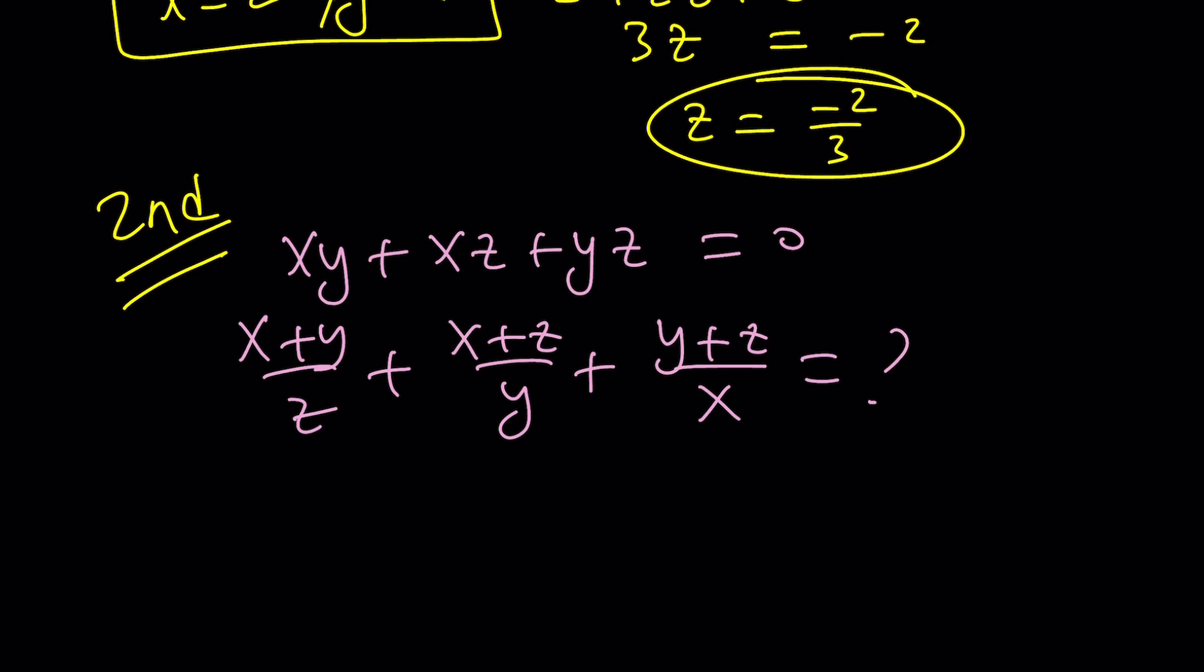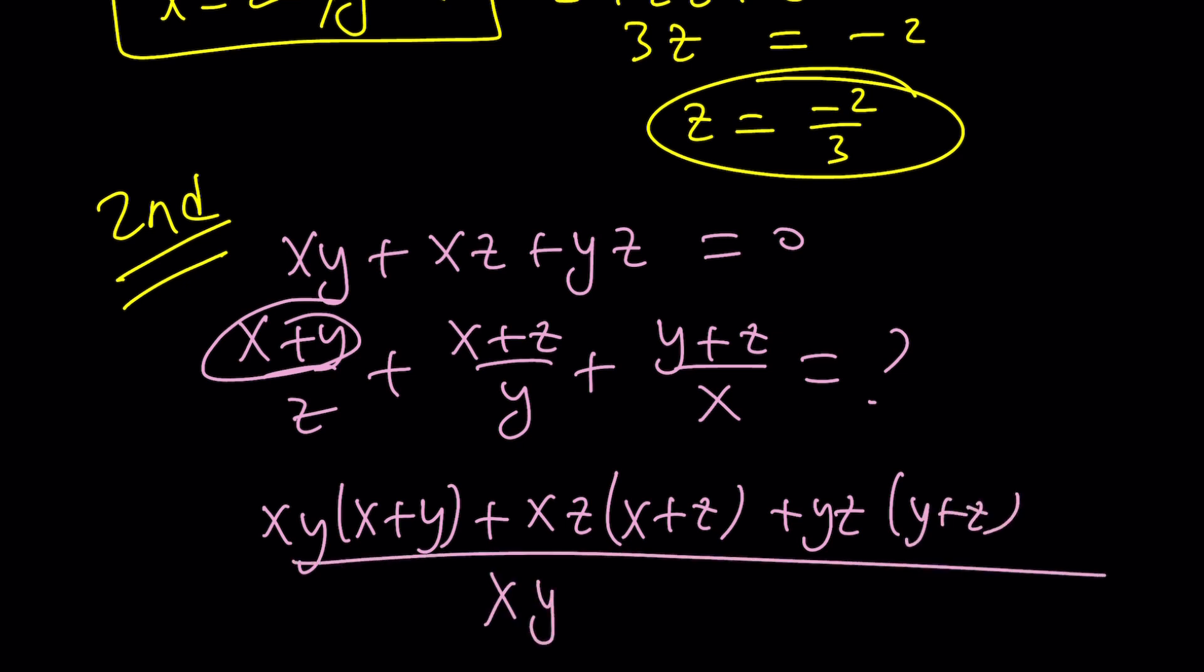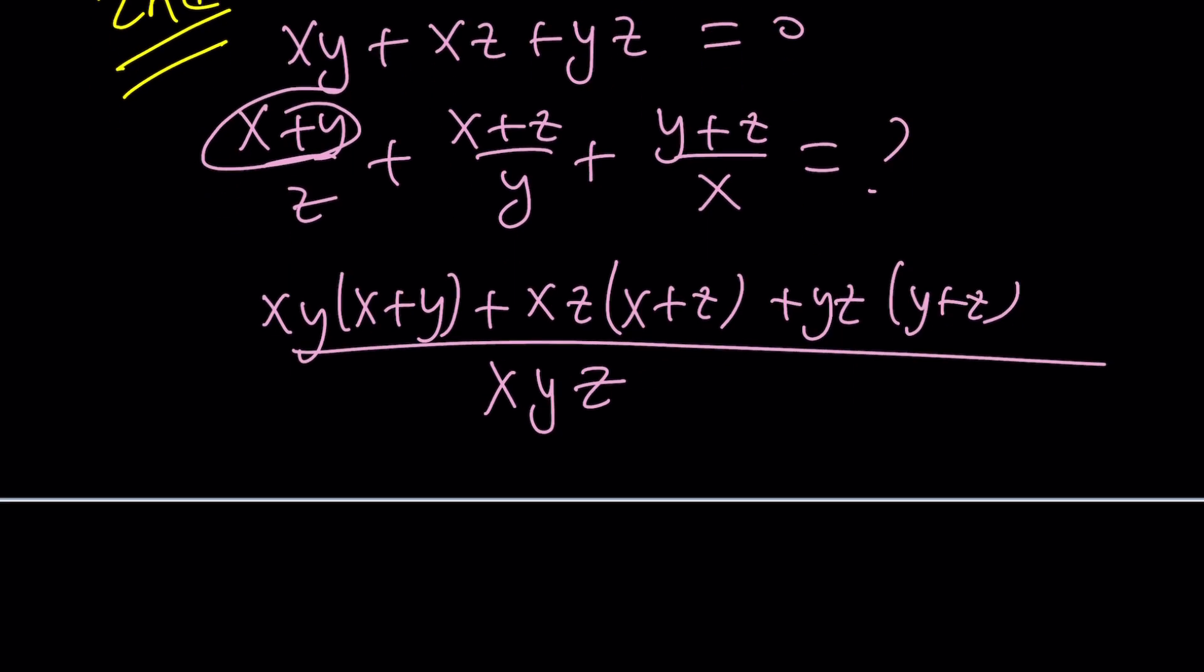We should multiply this by xy so it's going to be xy times (x+y) and then xz times (x+z) and then yz times (y+z) and that's all divided by xyz. So we're supposed to find the numerical value but the only thing we know is this one. How can we use that information? We could probably do this.